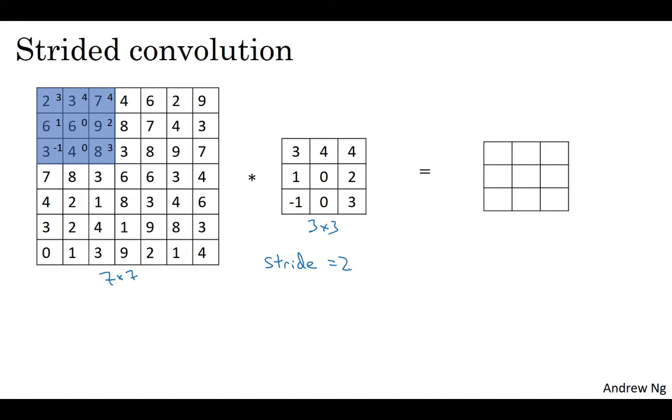What that means is you take the element-wise product as usual in this upper left three by three region and then multiply and add, and that gives you 91. But then instead of stepping the blue box over by one step, we're going to step it over by two steps. Notice how the upper left-hand corner has gone from this dot to this dot, jumping over one position. And then you do the usual element-wise product and summing, and that gives you 100. And now we're going to do that again and make the blue box jump over by two steps. So you end up there and that gives you 83.